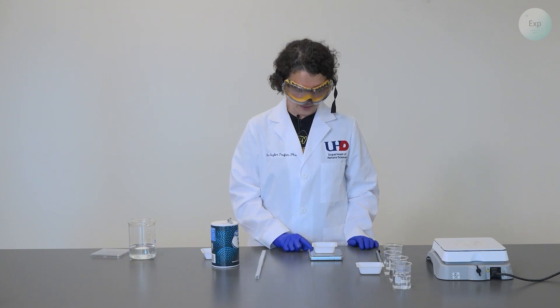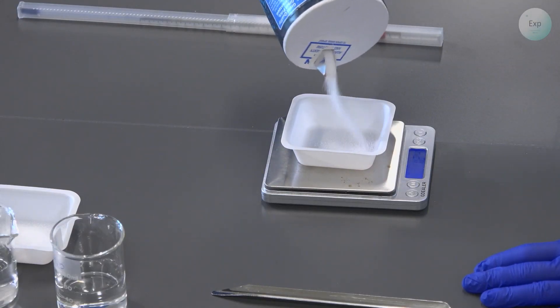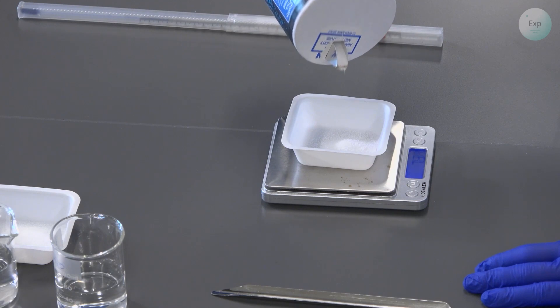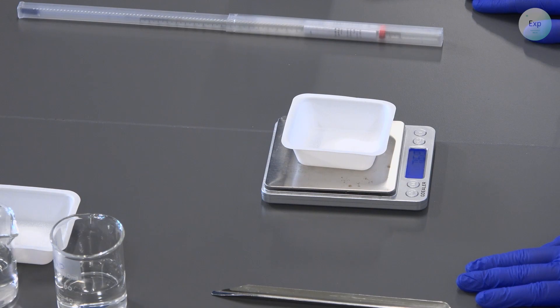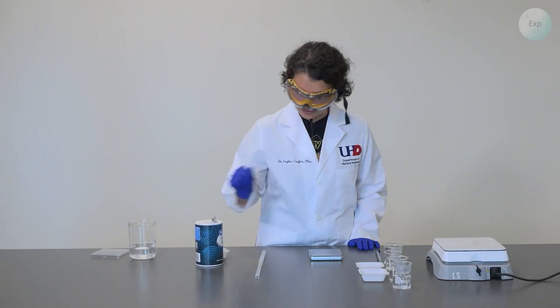Next, I will add a weighing boat on my scale, tare the mass, and add 7.5 grams. It is a little bit over at 7.68 grams. This will go in my third beaker.